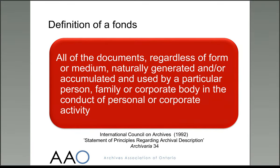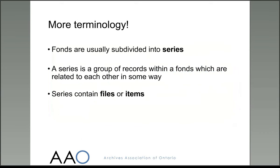Within a fonds, records are divided up into series. These are materials which are related to each other, sometimes by their form — for example, all the photographs in a fonds might be grouped into one series — or more often by their function, so perhaps all the minute books for an organisation might be arranged together, with all the correspondence sorted into a separate series. Inside a series, according to the Rules for Archival Description Standard, there may be files or items. Let's have a look at an example of a fonds to see how this works in practice.